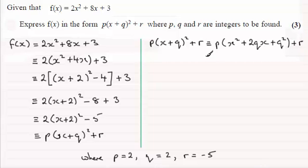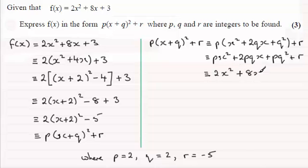Now if I expand the bracket here, we've got px squared, and then plus 2pqx, plus pq squared, and then plus the r. And this is to be identical to our function here, f(x) identical to 2x squared plus 8x plus 3.